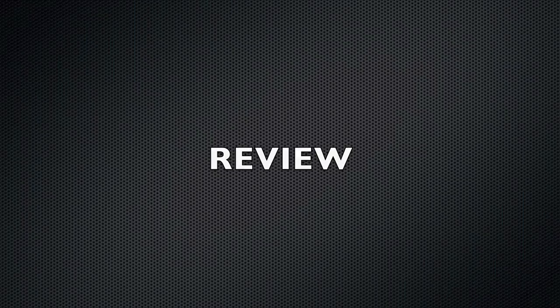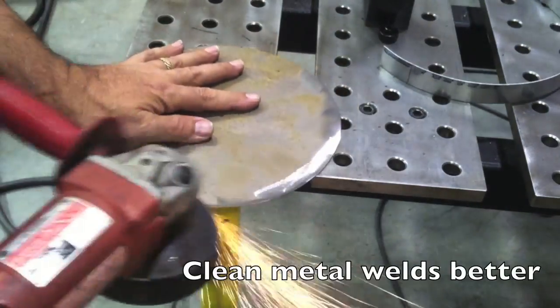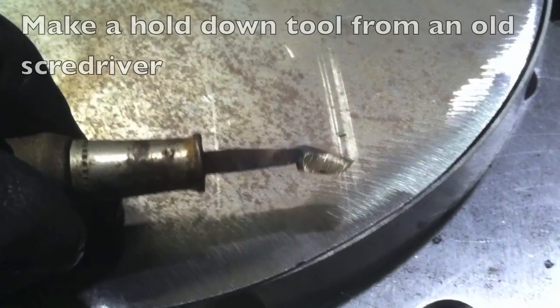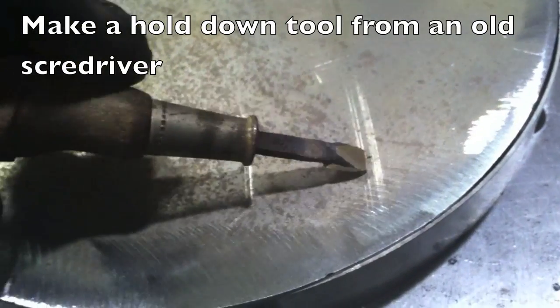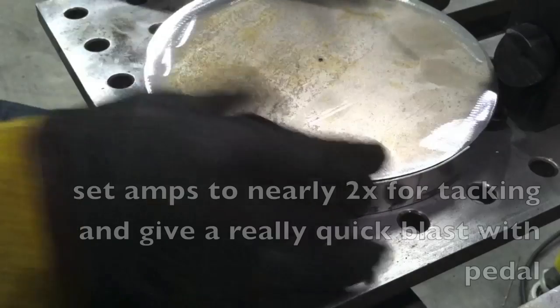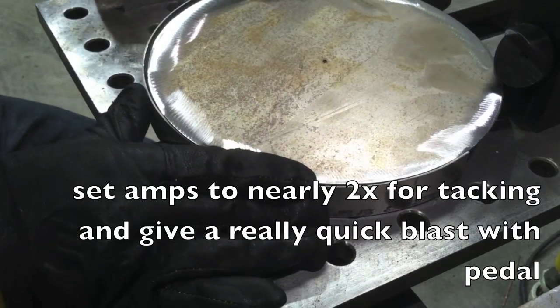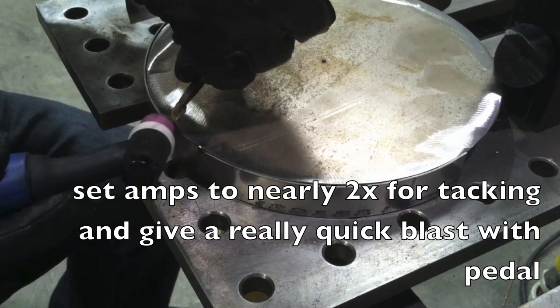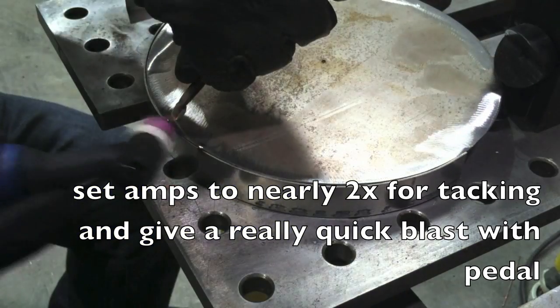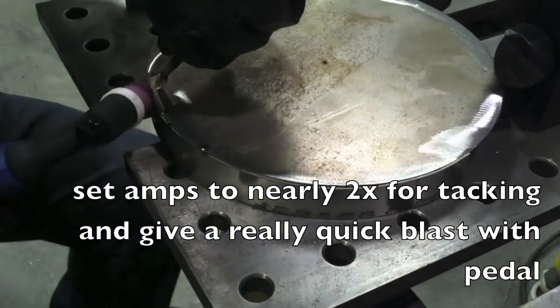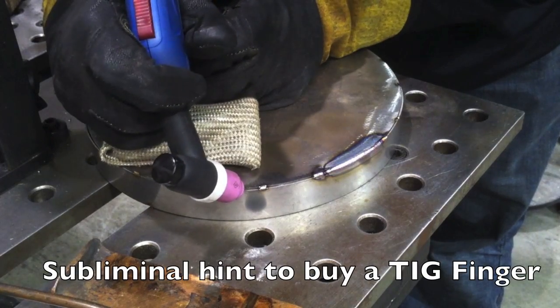All right, a little review of everything we did here today. Number one, clean metal works better, so you always want to clean your metal, especially if it's been plasma cut. And number two, this little handy tool works great for thin sheet metal fusion tacks. And for tacking, set the amps to pretty much two times what you would weld at. So I would have welded this at nearly 40, I would have set it nearly up at 80 and given it a really quick blast with the foot pedal to get a really quick tack that doesn't penetrate and doesn't warp.